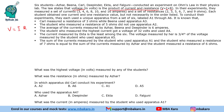In this experiment, they measured a set of currents. These are the currents they measured, and the set of resistances is given to us. Each student obtained one current and one resistance value, but not necessarily in the listed order. They each used a unique apparatus from a set of 6 labeled A1 through A6. For each student we will compute V = IR and find the product V.